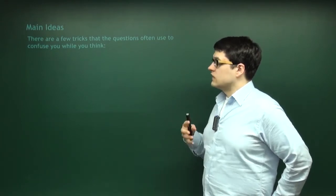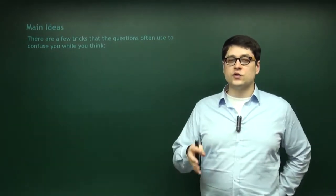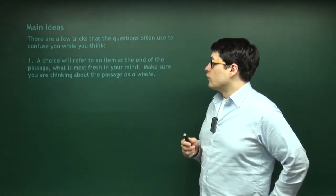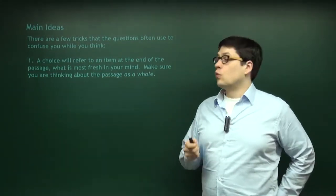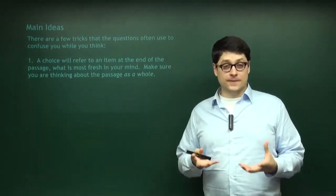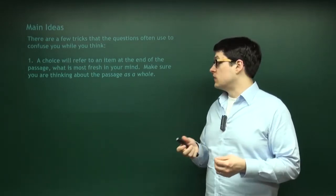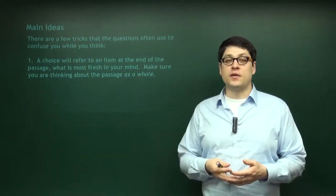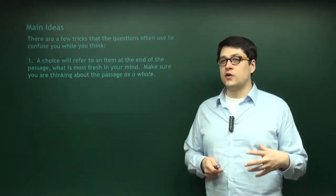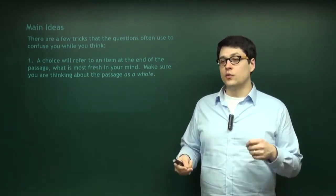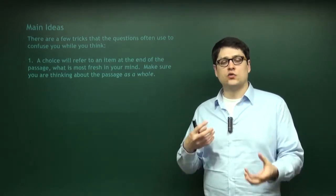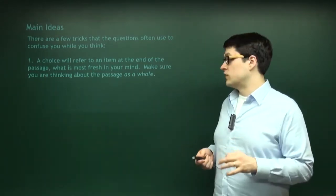There are a few tricks that the questions will use to confuse you. For example, a choice will refer to an item at the end of the passage rather than the passage as a whole. Say most of the passage is about dogs, and at the end it says 'and cats also.' The main idea is a history of dogs, but the answer choice says the main idea is a comparison between cats and dogs — when that was only a brief discussion at the end.